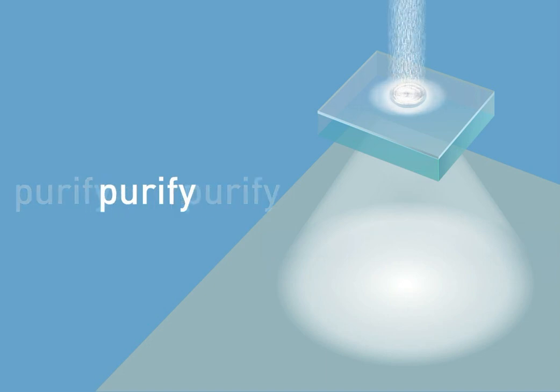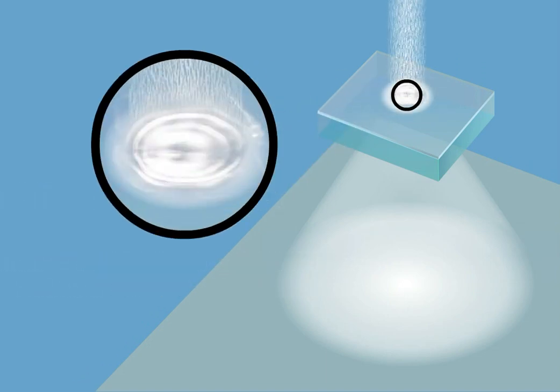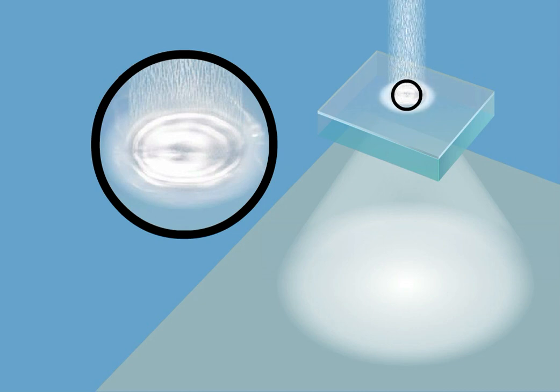MesoOptics purifies light. It removes striations and hot spots from lighting sources, creating smooth gradients of pure white light, free from color shifts.